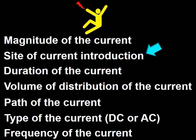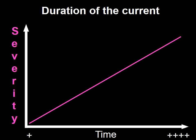The most severe manifestation will occur if the current is introduced in the proximity of the heart. The next factor that influences the severity of the clinical manifestations induced by current is duration. Duration, like magnitude, has a direct relation with severity. The longer the exposure to current, the worse things get.